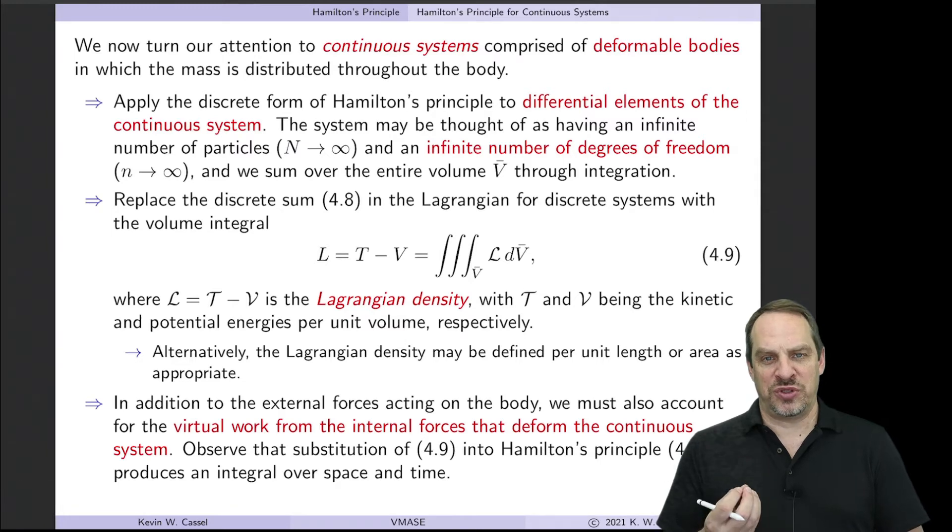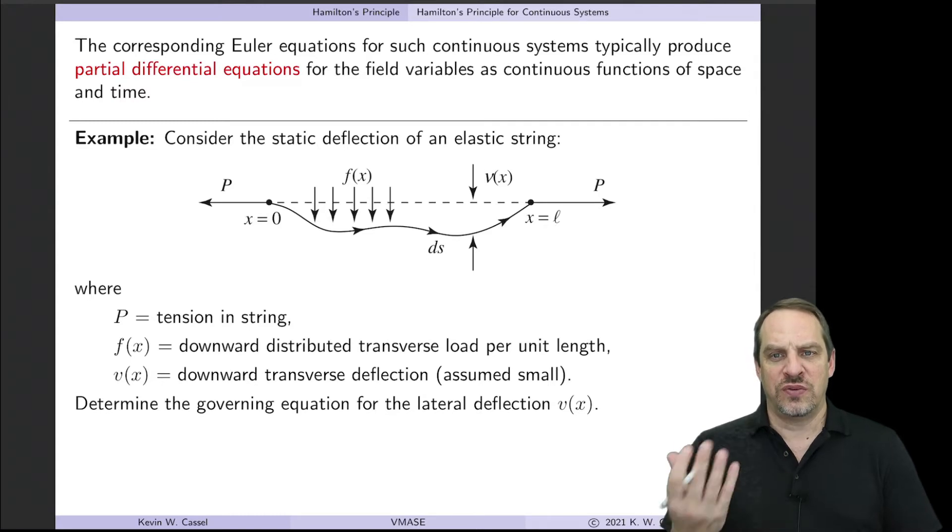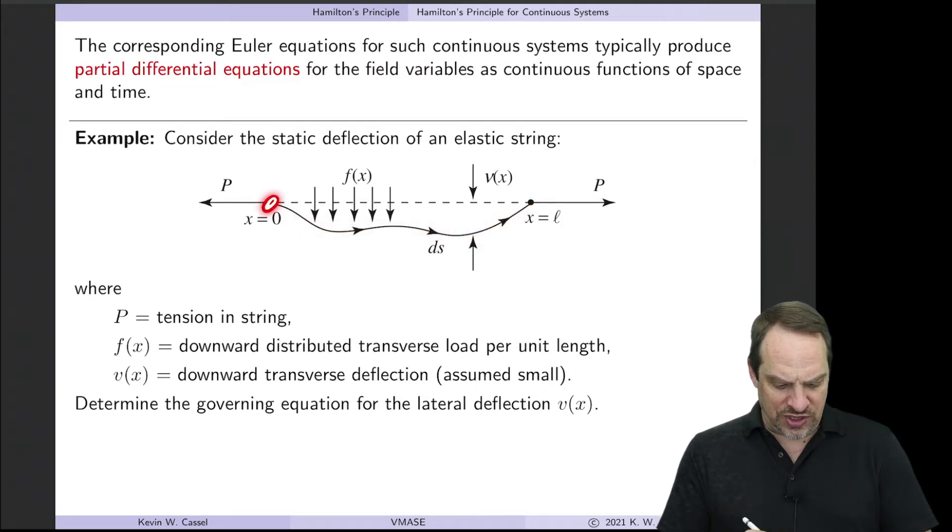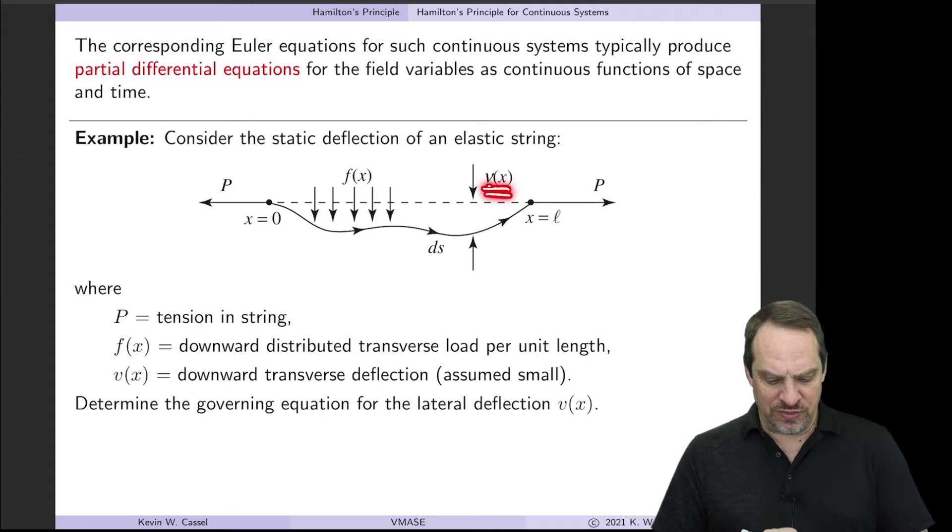So let's illustrate the application of Hamilton's principle to continuous systems using a relatively simple example. And typically, they will result in partial differential equations for the equations of motion, as opposed to ordinary differential equations for discrete systems. So what we have is a string of length L. It's in tension. Capital P is the constant force of tension in the string. And then there's a lateral distributed load, F as a function of X, acting vertically downward on the string. And that causes a deflection, V of X, of the string. And it's this deflection that we're looking for in response to the P and the F of X. So X goes from zero to capital L. And dS, as always, is a little differential element along, in this case, the V of X.